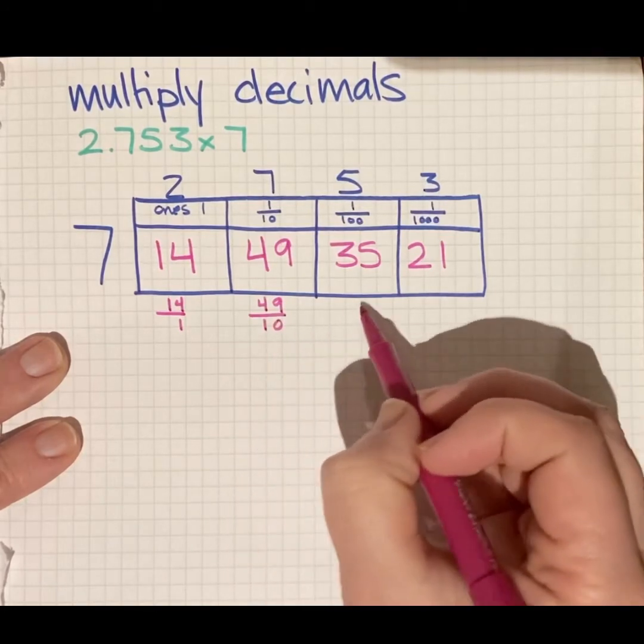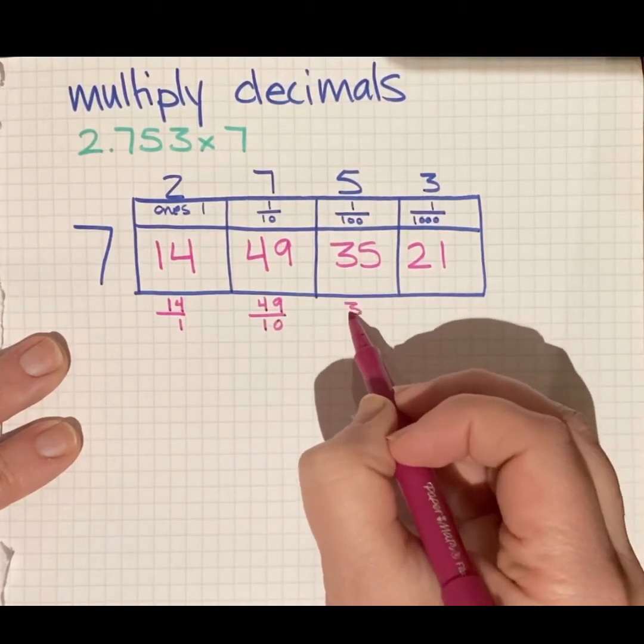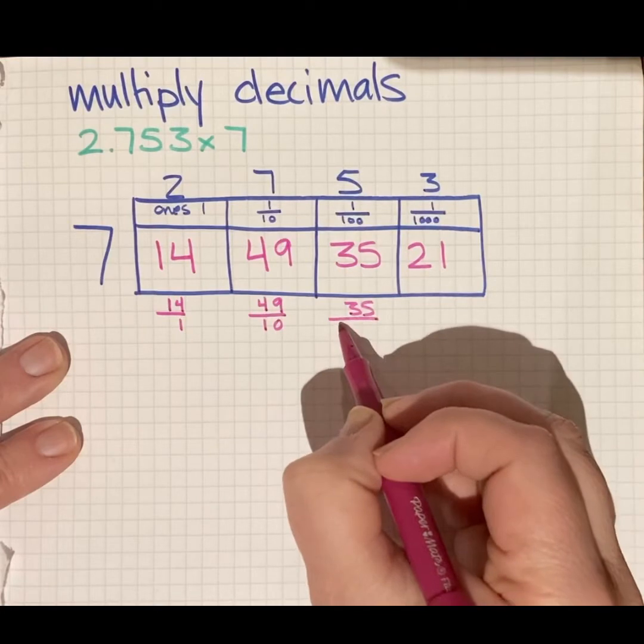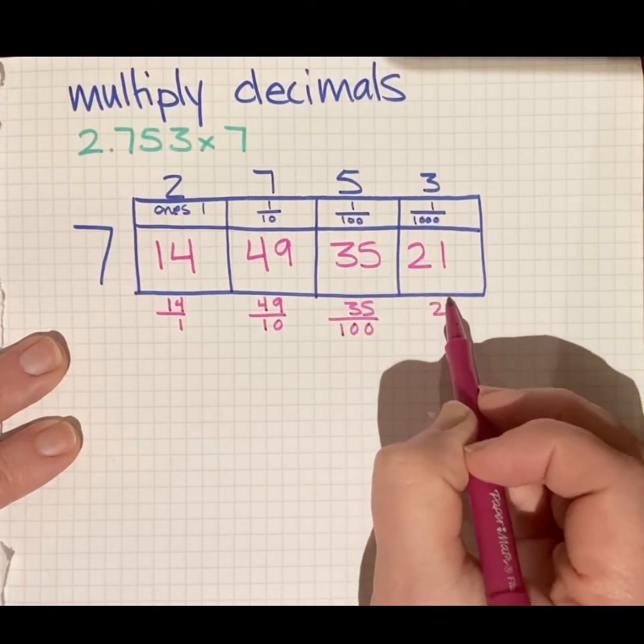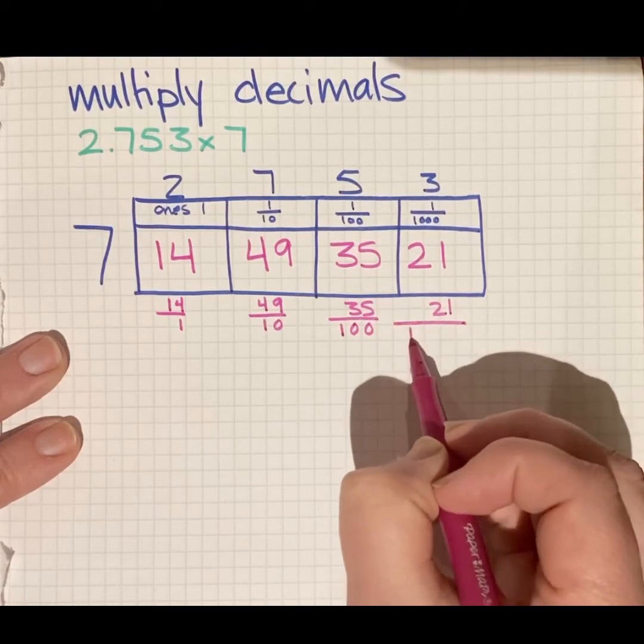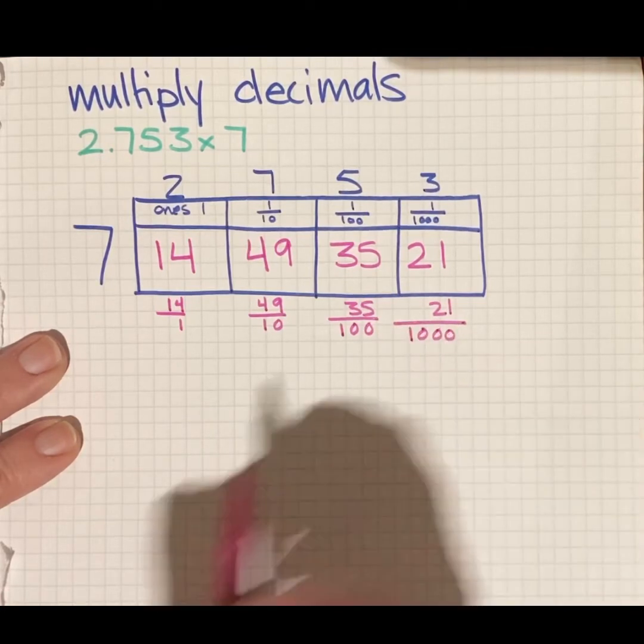I have 49 tenths. They line up again. I have 35 hundredths. My place value is lining up. And I have 21 thousandths. Guess what's lining up there.